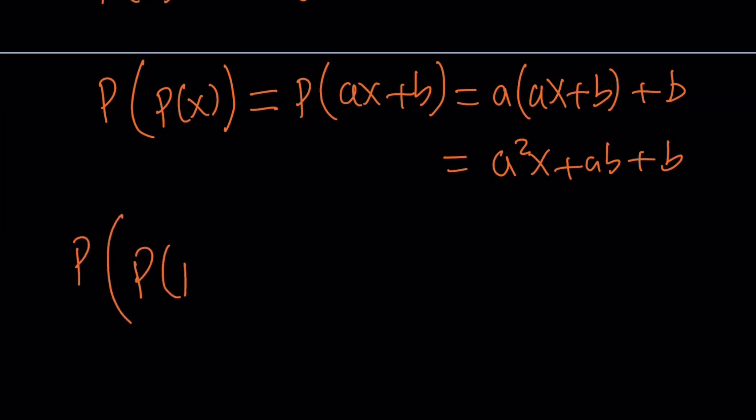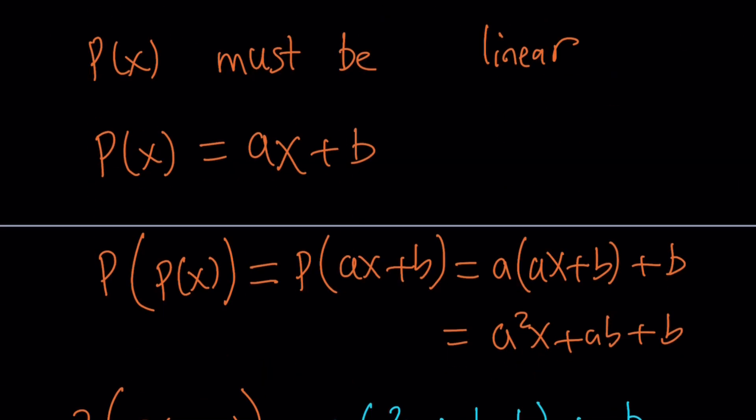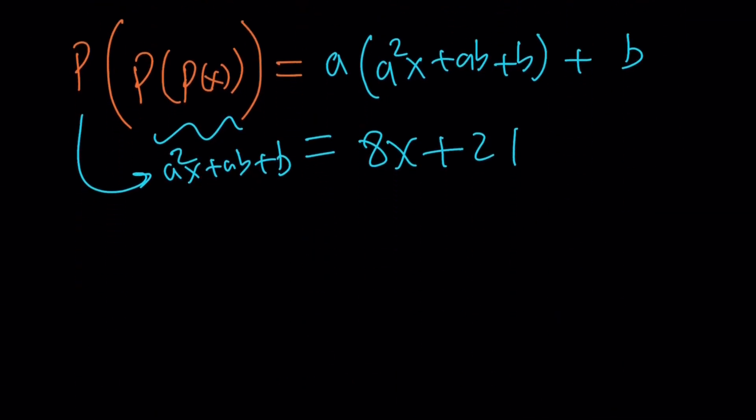What is p of p of p of x? Well, I already know this part, right? This is a squared x plus ab plus b. And if you p it again, like, don't get me wrong, if you apply p to this, you're going to get the following: a times a squared x plus ab plus b, this is ax but x is being replaced by that, plus b. And guess what? This is equal to 8x plus 21. Was it the original one? Let's check. Yeah, that's right. 8x plus 21. So we got ourselves an equation.